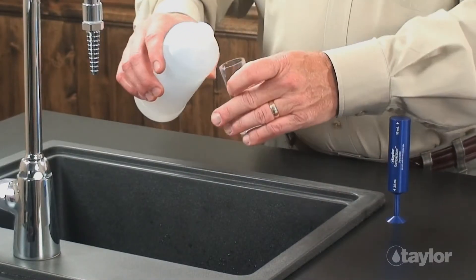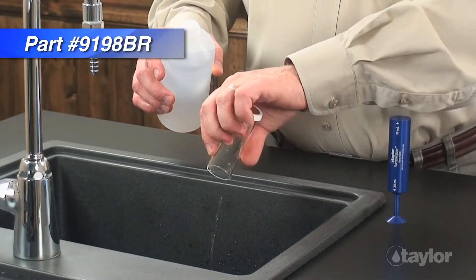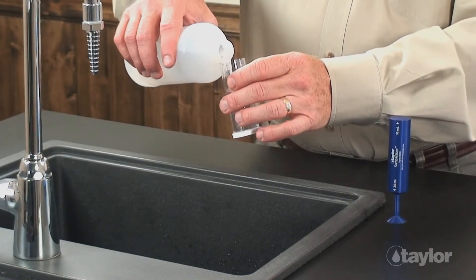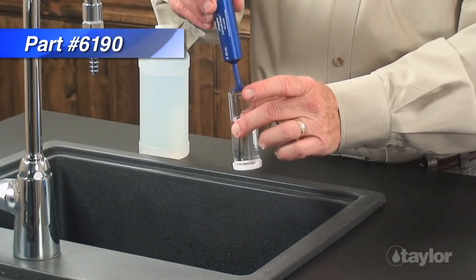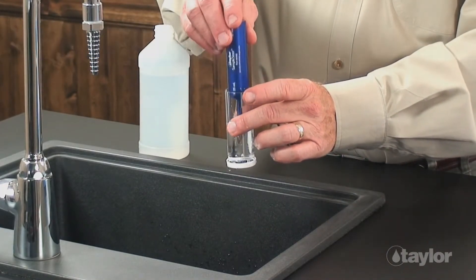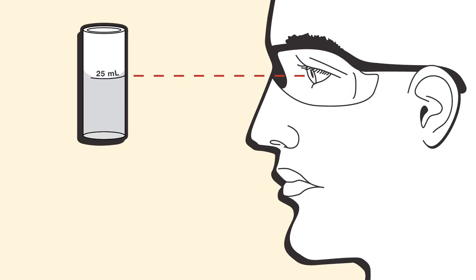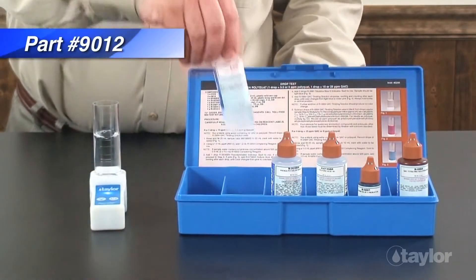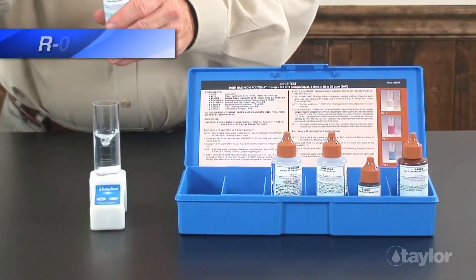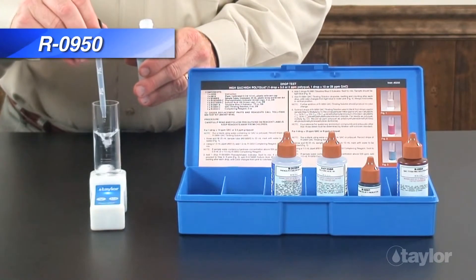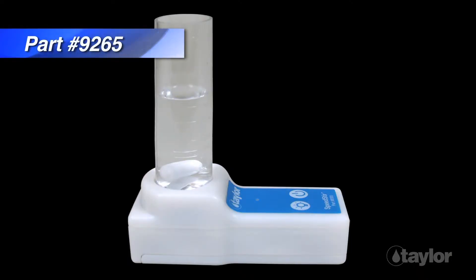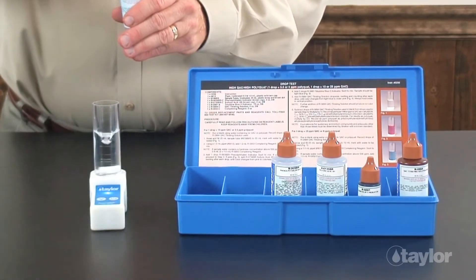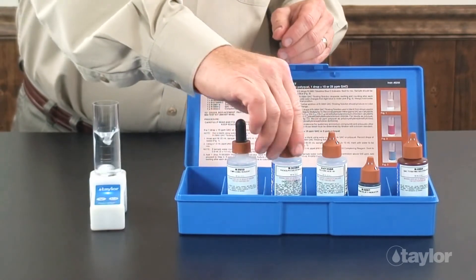Rinse and fill the sample tube to the 25 mL mark with the water to be tested. Using a 1 mL pipette, add 1 mL of complexing reagent and swirl to mix. For this demonstration we are using Taylor's Speedster, which is sold separately, but you can also manually swirl the sample. If the sample water contains a hardness concentration above 500 parts per million, add 2 mL of complexing reagent.